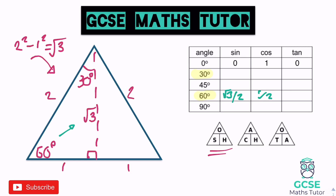For tan 60, using the TOA triangle, it's opposite over adjacent. The opposite for 60 is root 3 and the adjacent is 1, so it's root 3 over 1, which is just root 3. So there are our first three values using the angle of 60 degrees, just read off the triangle.